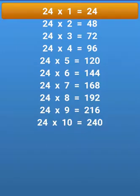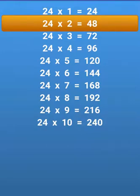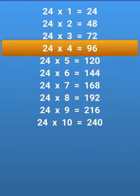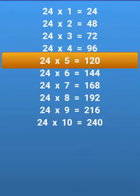24 times 1 equals 24, 24 times 2 equals 48, 24 times 3 equals 72, 24 times 4 equals 96, 24 times 5 equals 120.